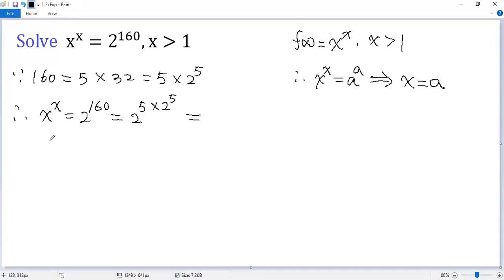Using exponent rule, we can write as 2 to the power of 5, then to the power of 2 to the power of 5, which is 32 to the power of 32.